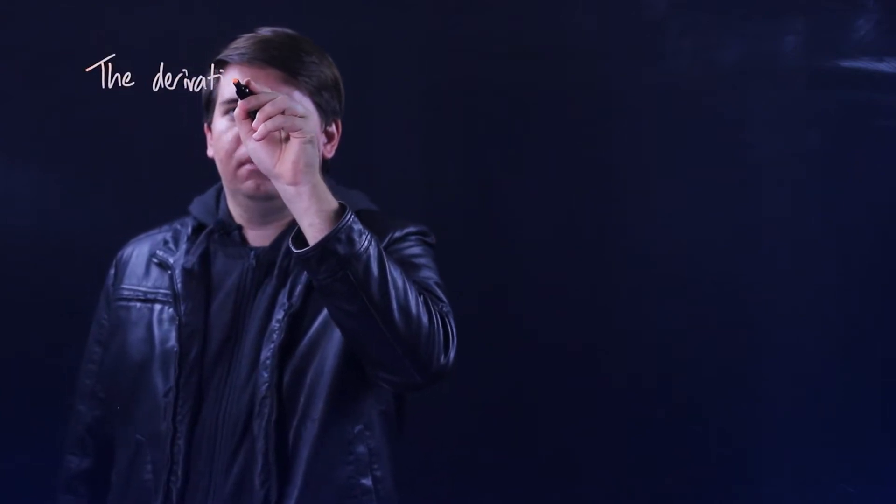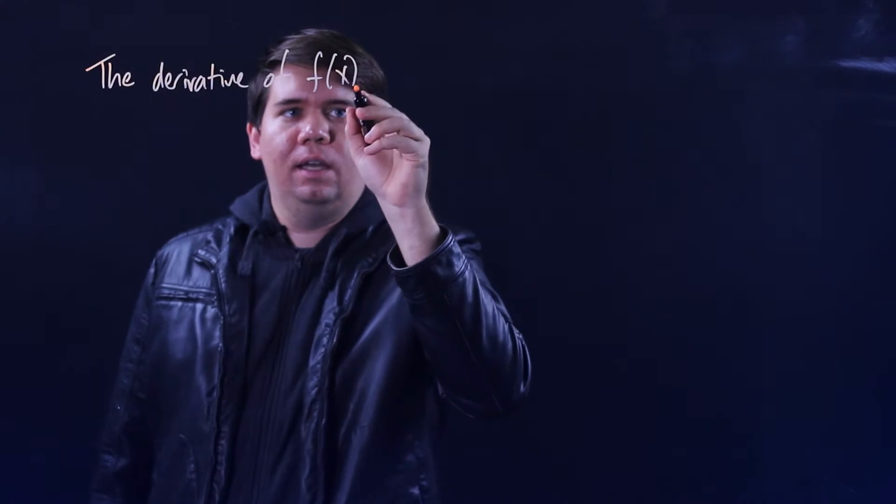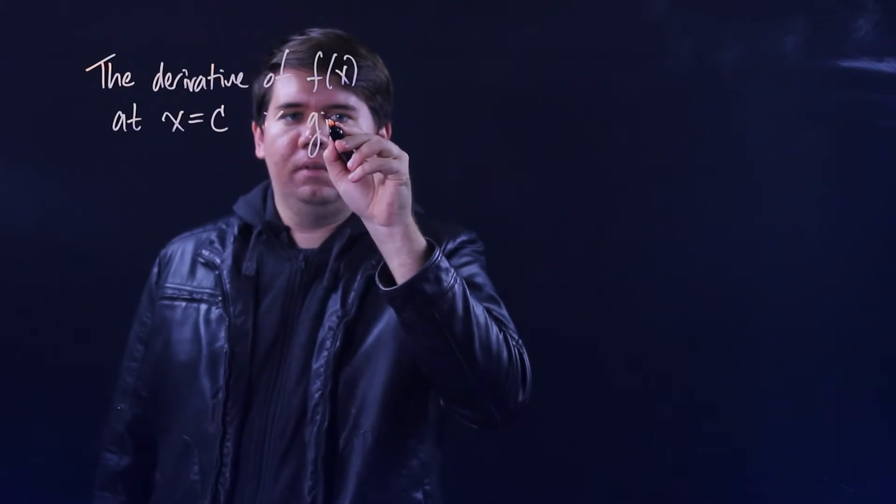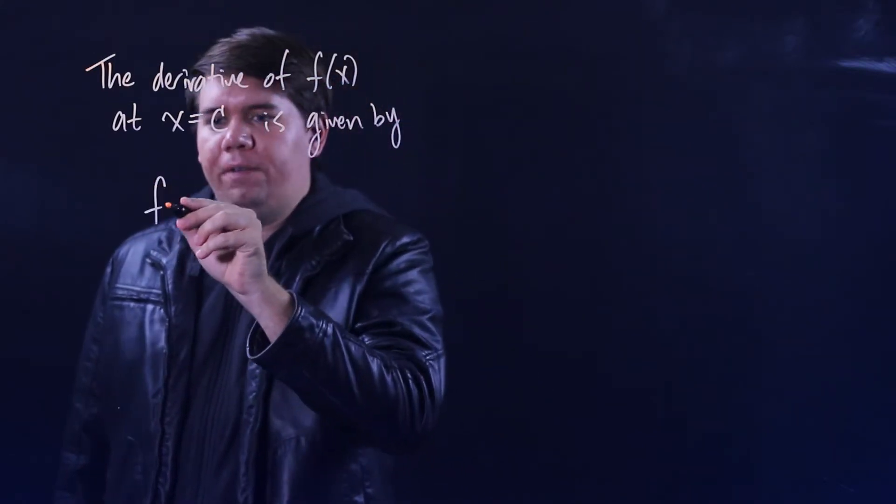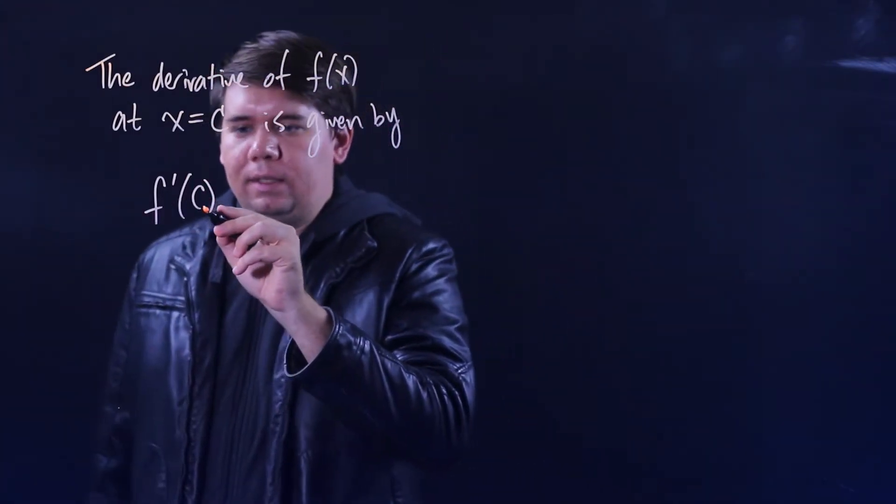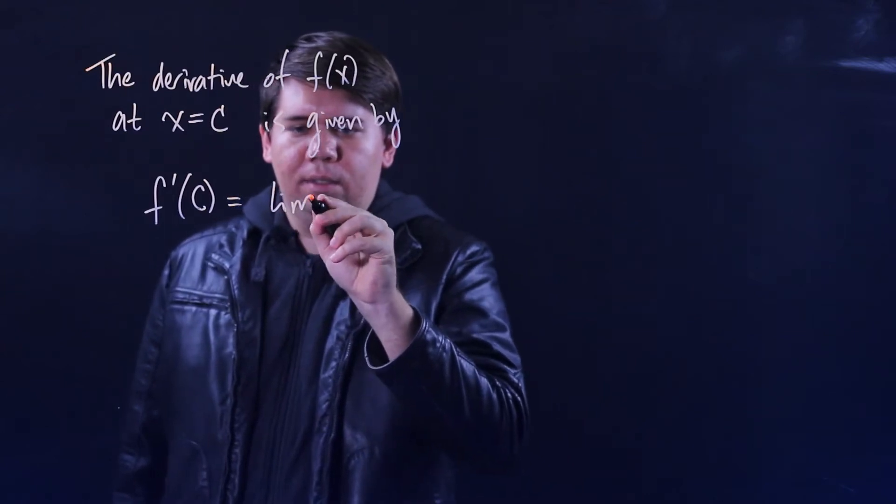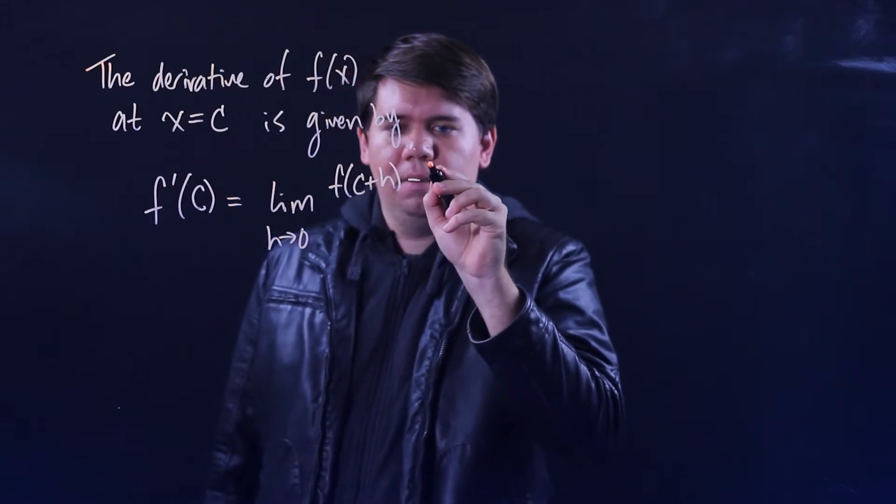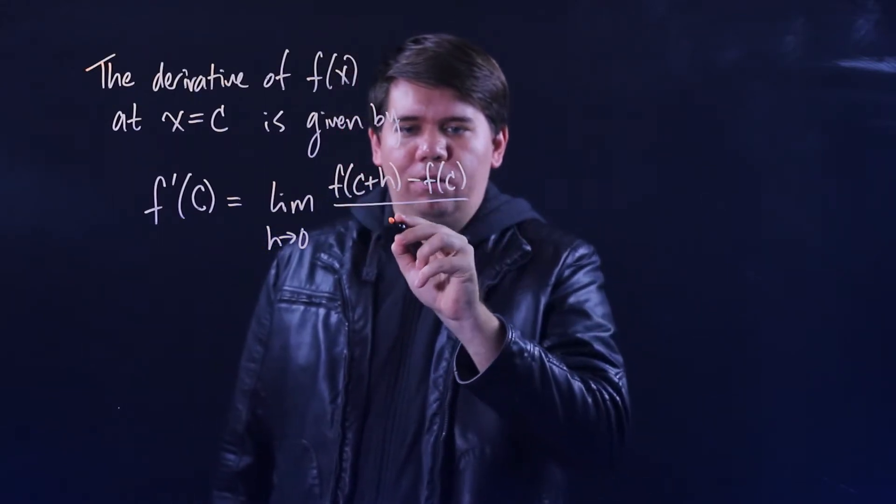We've been building up to it and now is the time where we can define the derivative of a function at some point. We'll say that the derivative of the function f(x) at some point x equals c is given by f'(c), this would be my notation for the derivative of f at c, and it's calculated by the limit as h goes to 0 of f(c+h) minus f(c) all over h.